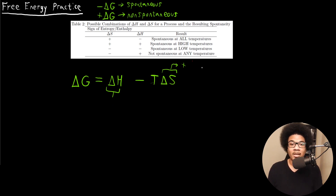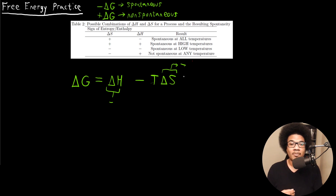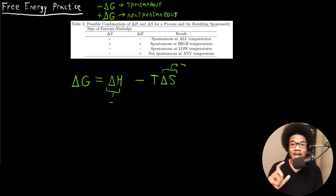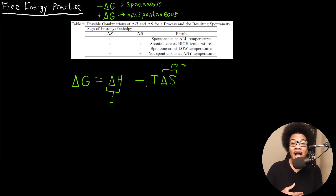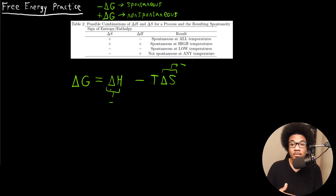The third case is if both are negative: a negative ΔH and a negative ΔS. If that's the case, it's going to be spontaneous at low temperatures. Since ΔS is negative, the TΔS term is going to be positive. If the temperature is high enough, you can get a positive result — a non-spontaneous process. But if the temperature is low, the ΔH term will have greater magnitude and it would be a spontaneous process.